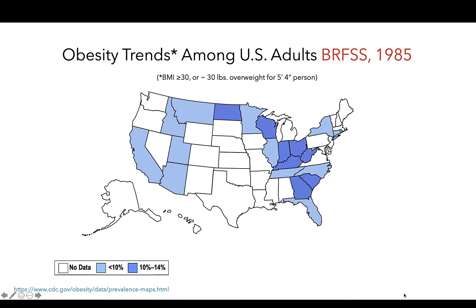For reference, this would be an individual with a height of 5 feet 4 inches who is around 30 pounds overweight. Here we can see that in 1985, less than half of states even had obesity-related data.